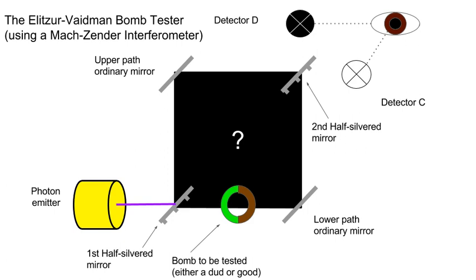A light-sensitive bomb — it's not known whether it's live or a dud. A photon emitter produces a single photon for the purposes of the experiment. After being emitted, the photon travels through the box below. The box contains an initial half-silvered mirror; the photon enters the box when it encounters this beam splitter. The photon will either pass through the mirror and travel along the lower path inside the box, or be reflected at a 90-degree angle and travel along the box's upper path.